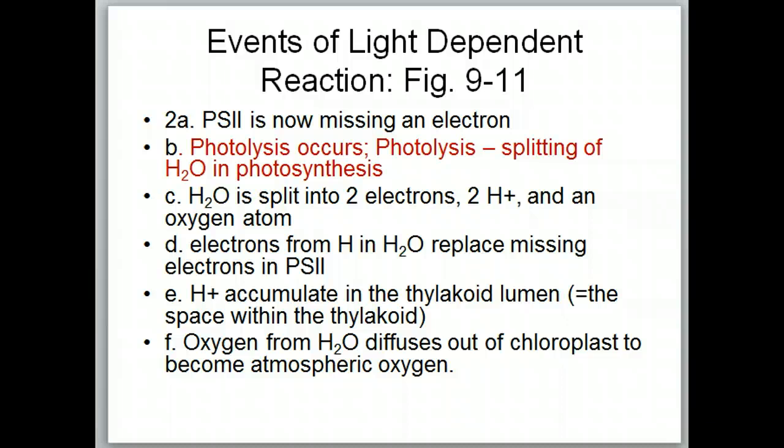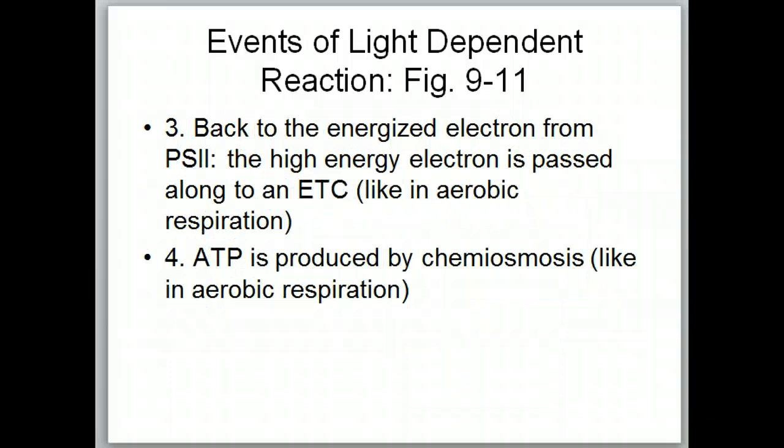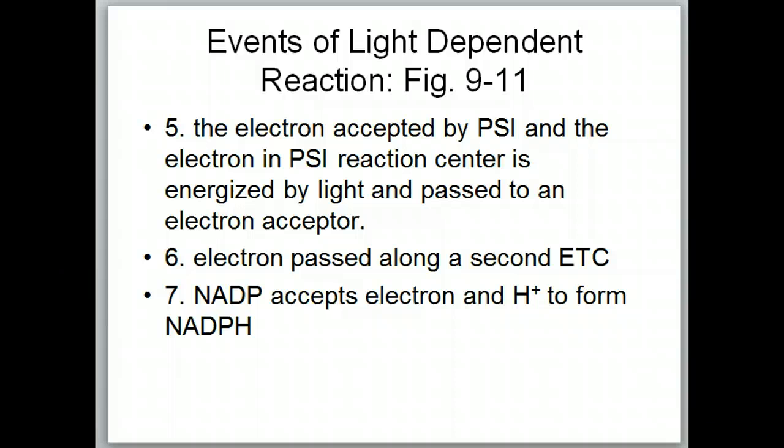Notice the term photolysis. Photolysis is the splitting of water in photosynthesis. When that water splits, it yields two electrons, two hydrogen ions, and an oxygen atom. The electrons and the hydrogen ions are used in the process of photosynthesis. The oxygen is not used in the process of photosynthesis, and it becomes atmospheric oxygen. There are more details about the process, and as always, refer back to that diagram.